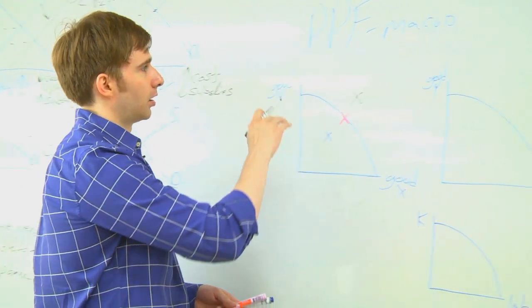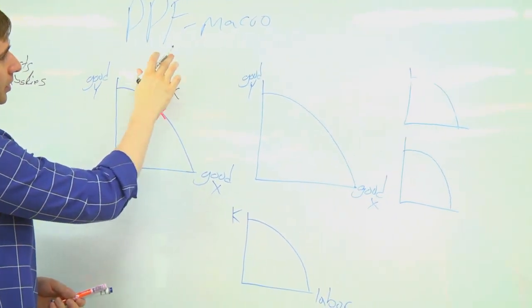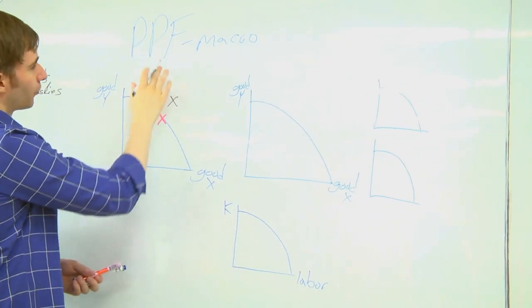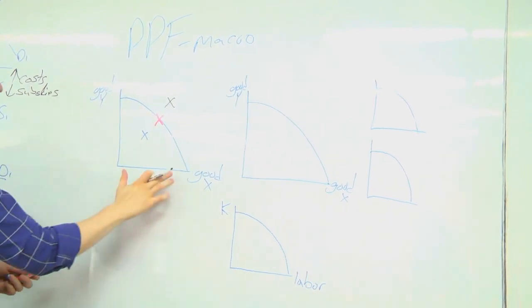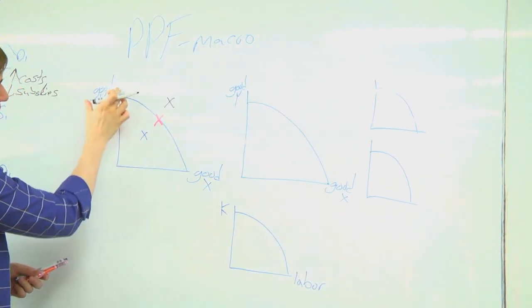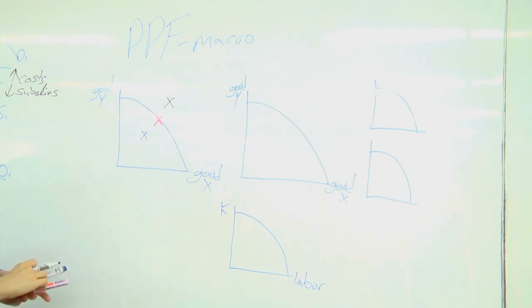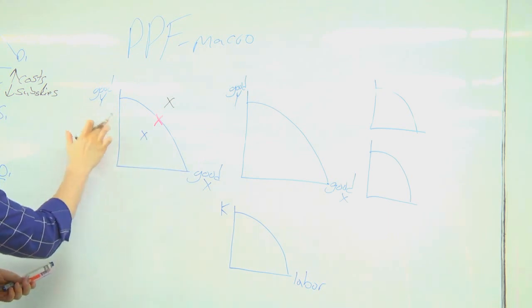The next part we're going to talk about are the production possibility curves or frontier. On these graphs we usually have two goods. We'll have a good Y and a good X.